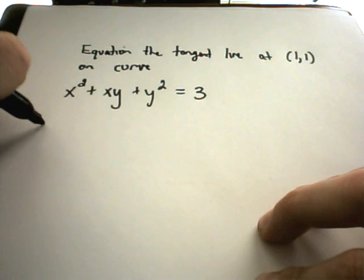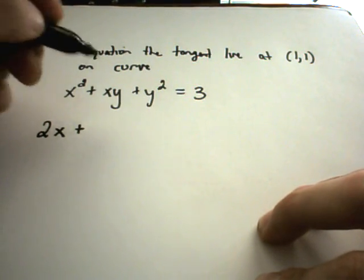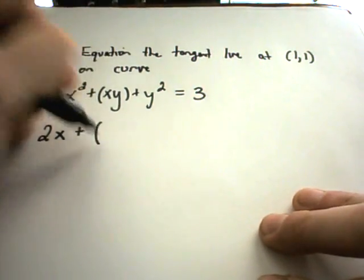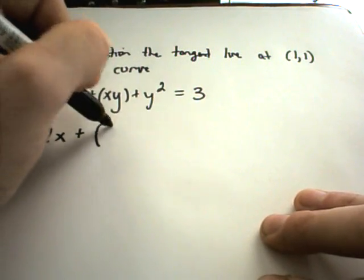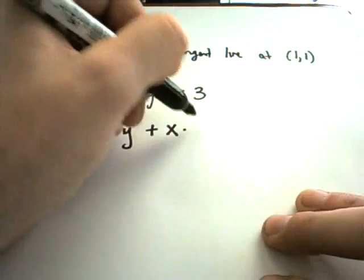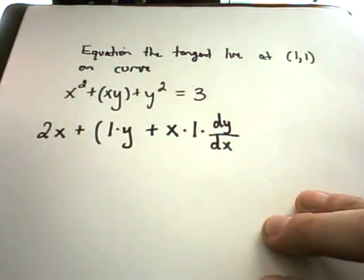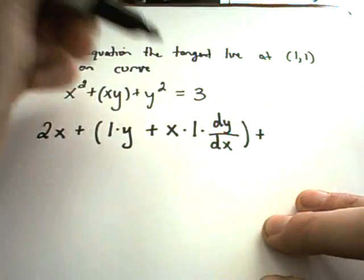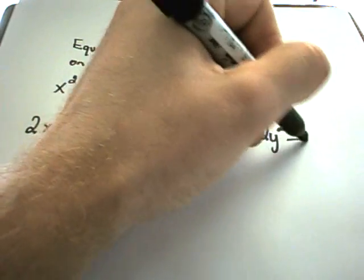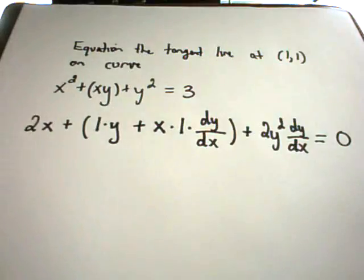So, to find the slope, we basically need to solve for dy/dx. If I take the derivative on the left side, I'll get 2x. I'll have to do the product rule on the xy term. So, the derivative of x is 1, we'll leave the y alone. Plus, now we'll leave the x alone. The derivative of y is 1, and we have to tack on our dy/dx term. Plus, the derivative of y squared is 2y dy/dx. And, the derivative of the right side, 3, is just 0.